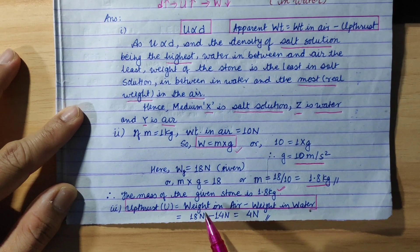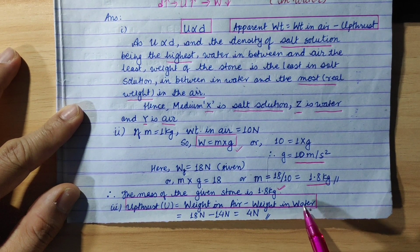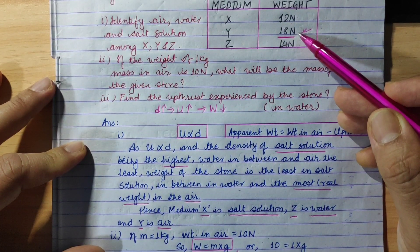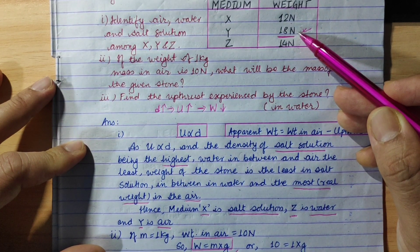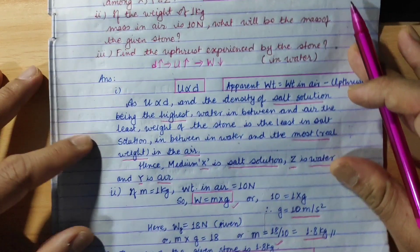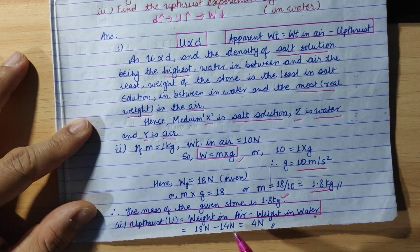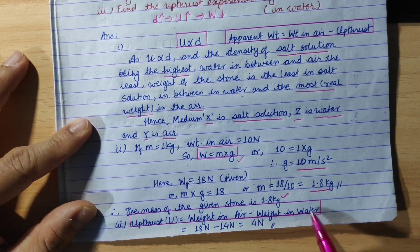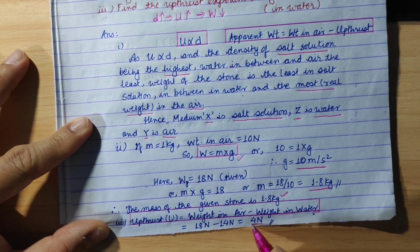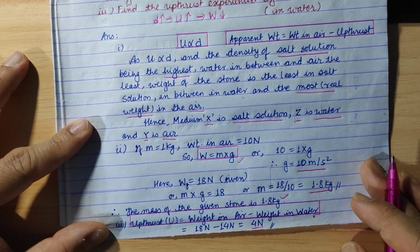The weight of the object in air is 18 newton, and the weight in water is 14 newton. Using the formula: upthrust equals weight in air minus weight in water, that is 18 N minus 14 N. So the upthrust experienced by the stone in water is 4 N.